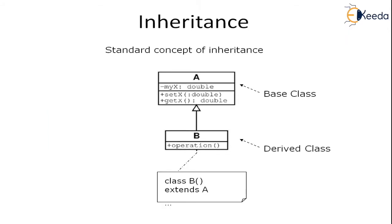This is one example of inheritance where you have a superclass and a child class, also called a base class and a derived class — class B extends A.